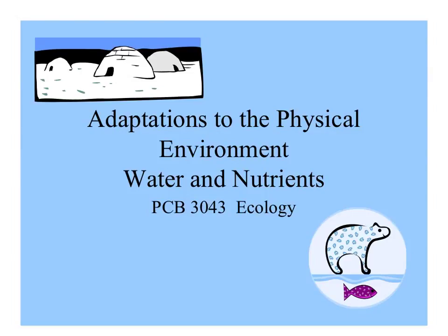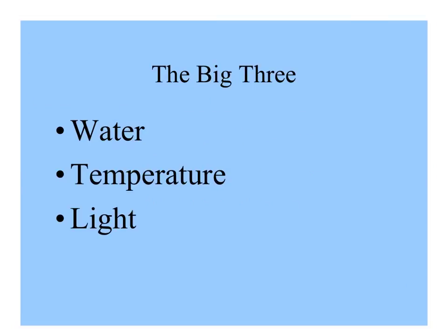Let's start talking about adaptations organisms make to their physical environment. The three main things we're going to be concerned with in the environment that affect the adaptations of organisms are water, temperature, and light. In this lecture we'll look at water and nutrients as they affect the adaptations of organisms.